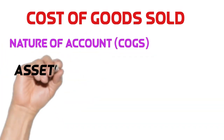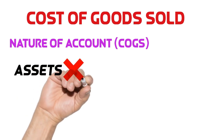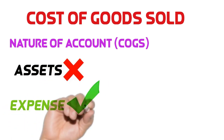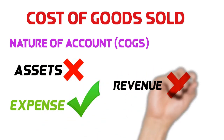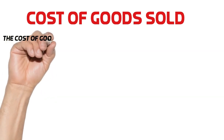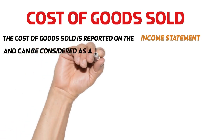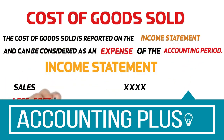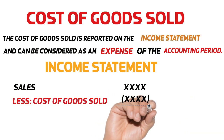After understanding the core concept of cost of goods sold, now we are going to look at the nature of the cost of goods sold account — whether it is an asset account, expense account, or revenue account. The cost of goods sold is an expense account. It is reported on the income statement and can be considered as an expense of the accounting period. By matching the cost of the goods sold with the revenues from the goods sold, the matching principle of accounting is achieved.